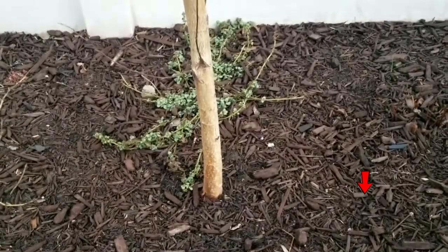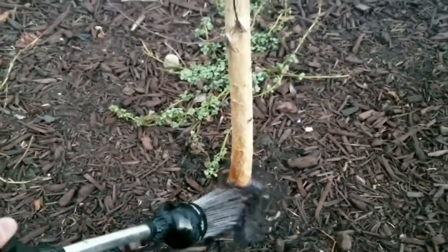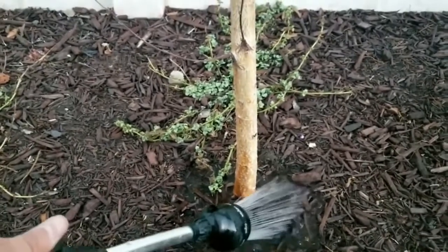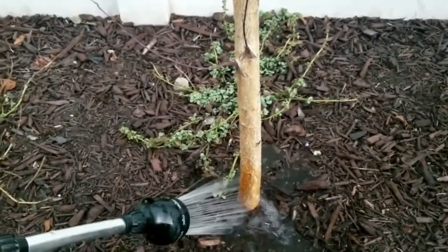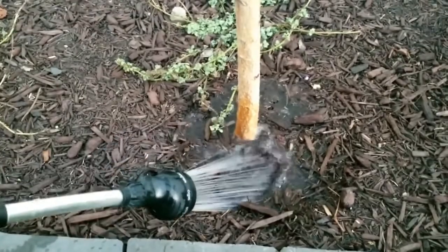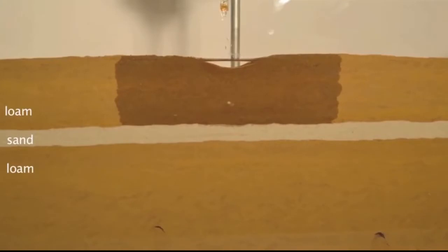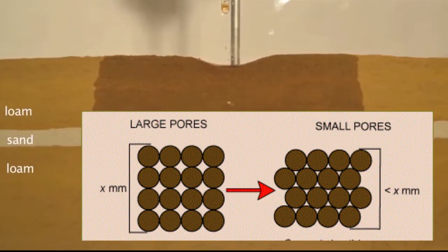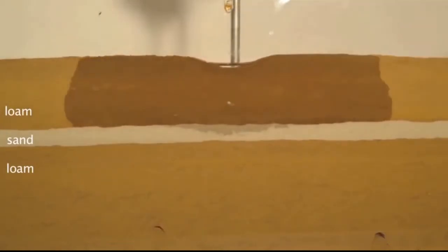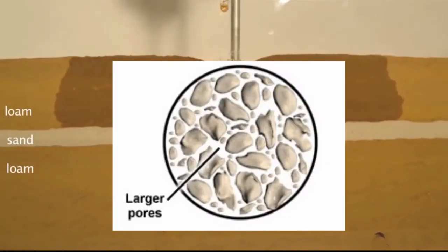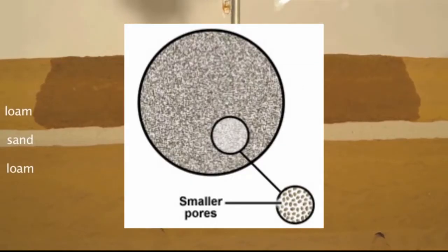The ability of a type of soil to retain water depends on the size of the spaces or pores between its soil particles. For plants to grow well, soil should have a mixture of large and small pores in order to retain just the right amount of water. The large pores allow excess water to flow through, while the small pores retain enough water for plant growth.